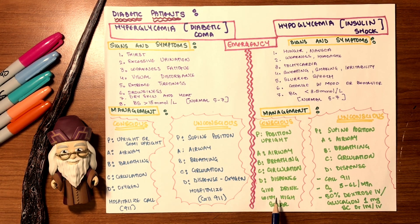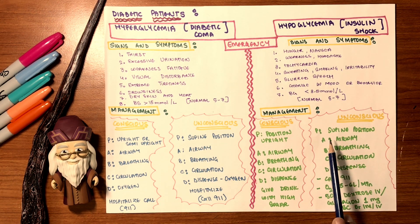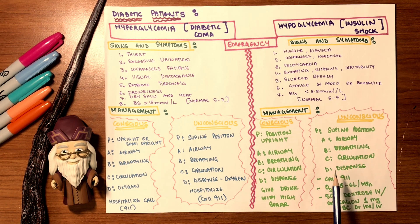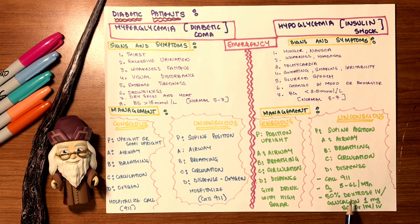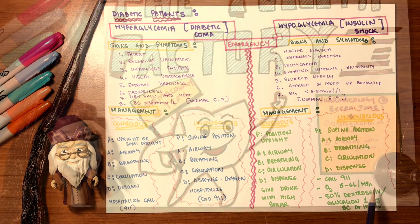For an unconscious hypoglycemic patient: place in supine position, ensure airway, breathing, and circulation are clear, then dispense oxygen at 3 to 6 liters per minute, and administer 50% dextrose IV, or glucagon 1 milligram subcutaneous, IM, or IV. Make sure you administer that during an unconscious hypoglycemic emergency.